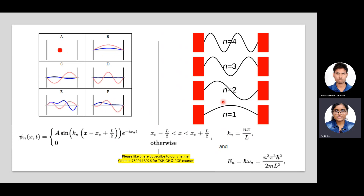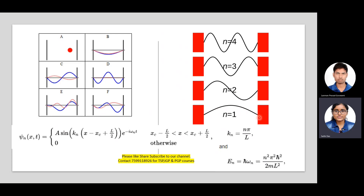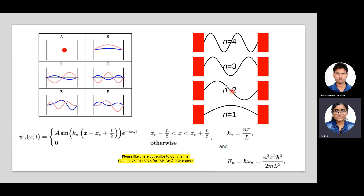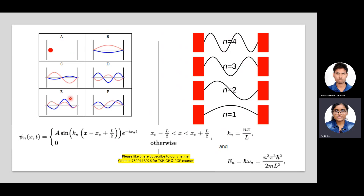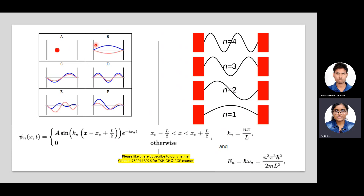The wave functions follow a pattern based on n: for n = 1 (ground state) there are no nodes; for n = 2 there is one node where ψ = 0; for n = 3 there are two nodes; for n = 4 three nodes, and so on. You can see the wave function changing shape accordingly as the particle moves inside this one-dimensional box potential.